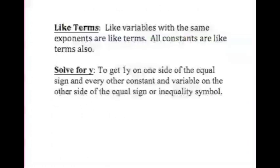Before we get started, let's take a look at a couple vocabulary terms. Like terms are variables with the same variable — notice the same letter — that have the exact same exponents. All constants are like terms, and remember you can combine like terms, which just means you can add them or subtract them from each other. To solve for y means that you get one y on one side of the equal sign, or the inequality symbol, and every other constant and variable on the other side.